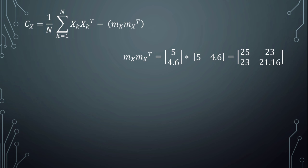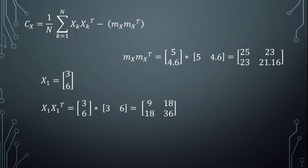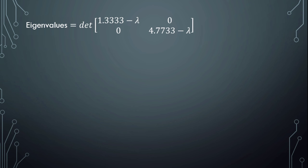We obtain that the expectation value or mean value is (5.4, 6), which also represents the centroid of the image. Now we calculate the covariance matrix. The first step is to calculate mx times mx transposed — it's very simple as you can see. To calculate xk times xk transposed from k equal to 1 to n, we compute it for every pixel value. For example, for x1 we get this matrix. The sum divided by n gives the covariance matrix with values 1.3 and 4.7. Now we calculate the eigenvalues with the determinant of (1.3 minus lambda) and (4.7 minus lambda).